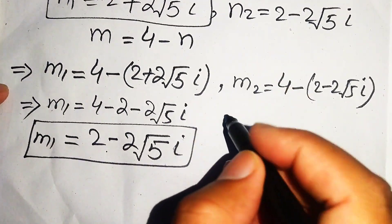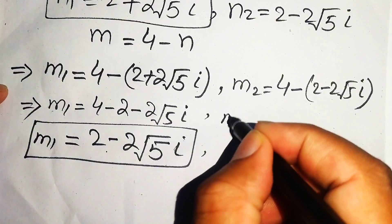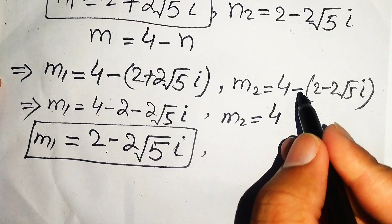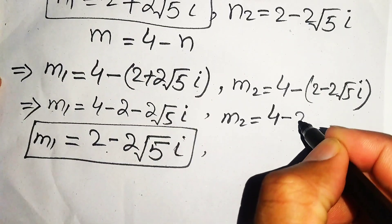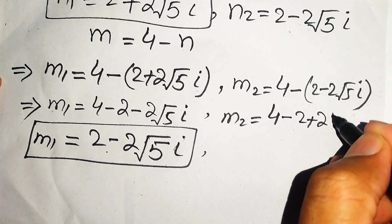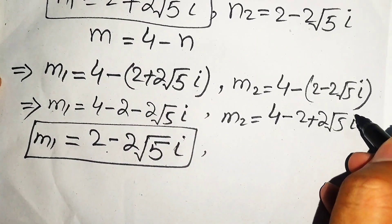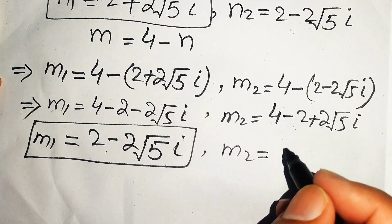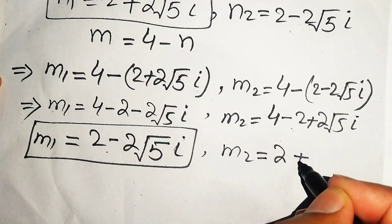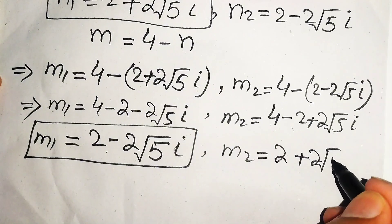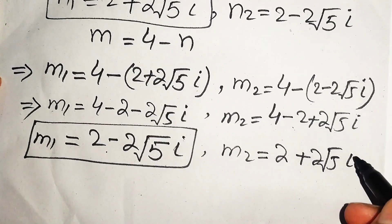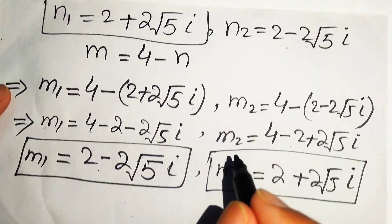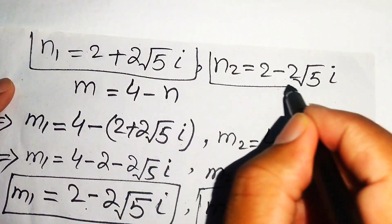For n2: m2 equals 4 minus (2 minus 2 root 5 i). Distributing the negative sign gives 4 minus 2 plus 2 root 5 i, so m2 equals 2 plus 2 root 5 i.